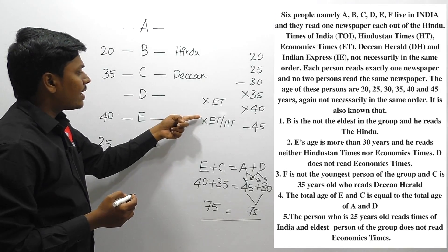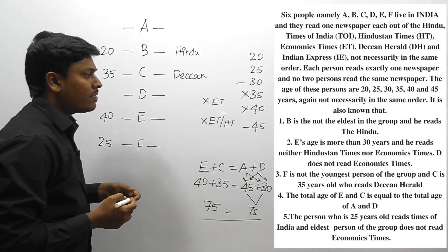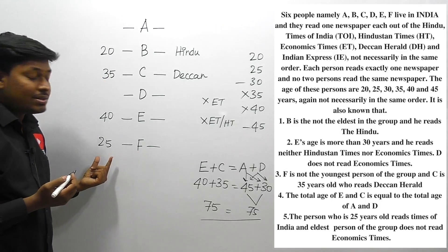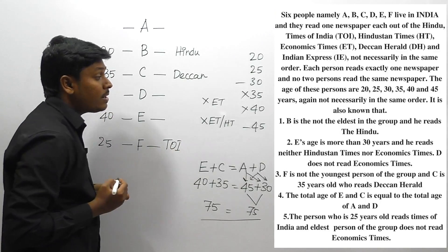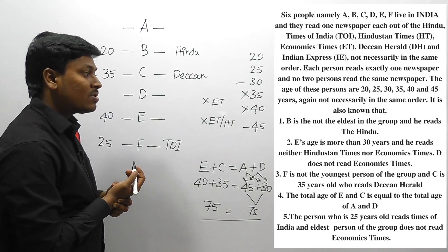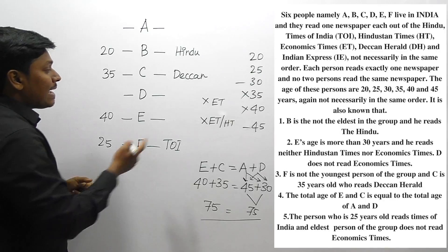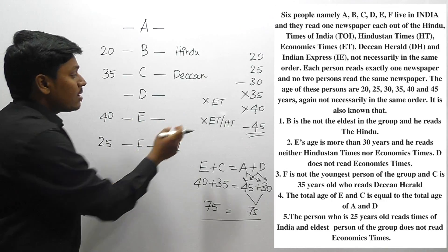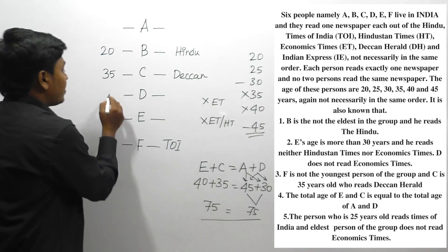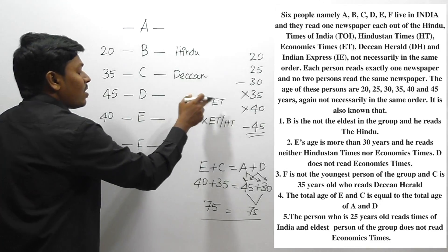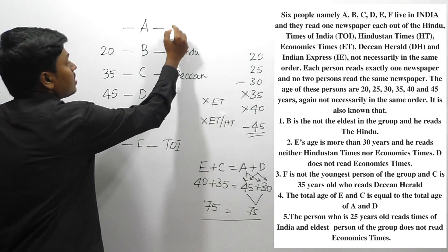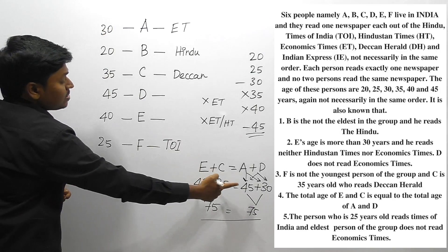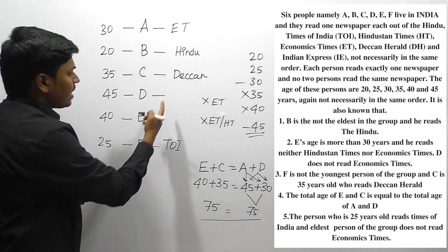Both D and E are not reading Economic Times. Moving to the next clue: the person who is 25 years old reads Times of India. Since F is 25 years old, F reads Times of India. Also, the eldest person does not read Economic Times. The eldest person is age 45. D does not read Economic Times, so D must be age 45. Since E also does not read Economic Times, the only person left for Economic Times is A, so A reads Economic Times and A's age is 30.